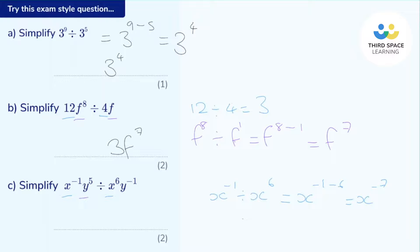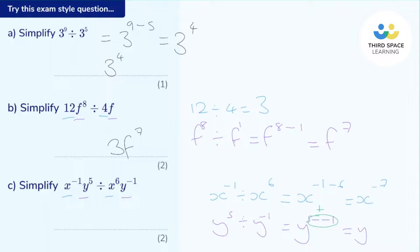Now let's see what the y's look like. We've got y to the power of five divided by y to the power of negative one — and I've got to be really careful here. So it's y to the power of five subtract negative one. We've got a negative and a negative next to each other, so I know that's a plus. So this is exactly the same as y to the power of five plus one, which is just y to the power of six. Bringing it all together: x to the power of negative seven, y to the power of six.